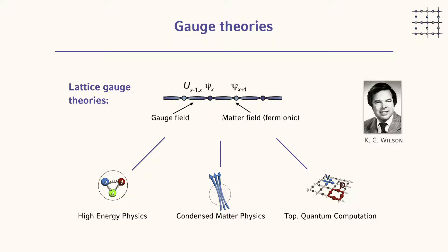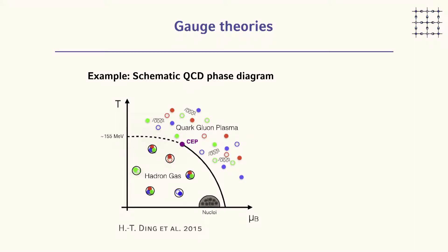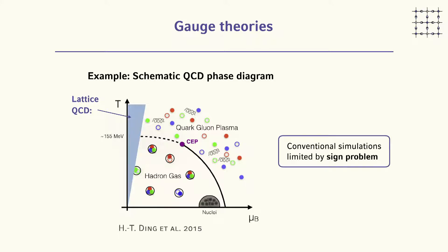Let me give one motivation for working in this direction. Lattice gauge theories have been extremely successful for studying QCD, but if you look at the QCD phase diagram and what can be accessed analytically or numerically with lattice QCD, it's only a tiny region of the full phase diagram. There's a lot of interesting physics to explore — some phenomena like confinement can already be seen in much simpler lattice gauge theories or quantum link models, which I'll introduce in the following slides.